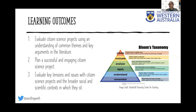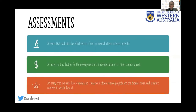Basically in this program, we wanted them to assess what citizen science projects are, how they can design their own, and what are some of the barriers and potential solutions within the wider academic sphere. In terms of the assessments, we critically aligned these to the learning objectives. They've got to do a report that evaluates the effectiveness of one or several citizen science projects, a mock grant application, the development and implementation of their own citizen science project, and then an essay that evaluates key tensions across the citizen science sphere. It's getting them to genuinely experience what it's like to write a grant application, which is one of the biggest barriers that faces early career researchers.